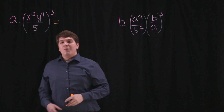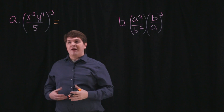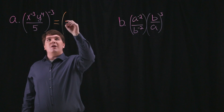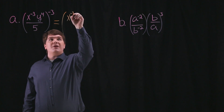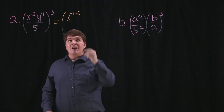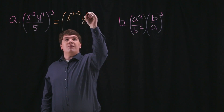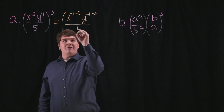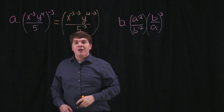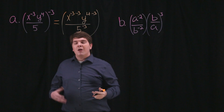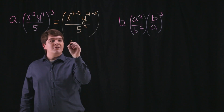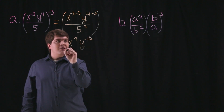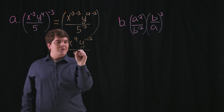For part a, we can begin by multiplying the exponents. What we end up with is x to the negative 3 times a negative 3, times y to the 4th times a negative 3, divided by 5 to the negative 3. Now simplifying each exponent, we end up with x to the 9th times y to the negative 12th divided by 5 to the negative 3rd.